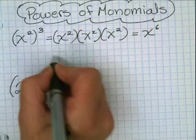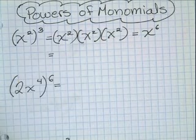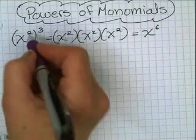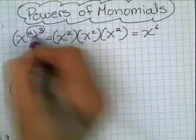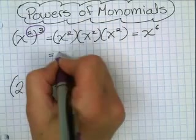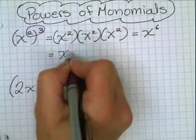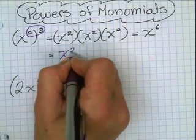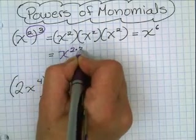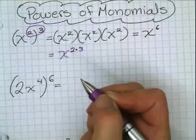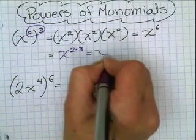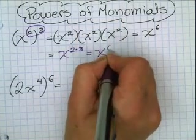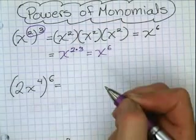The shortcut is to simply multiply the exponent with the raised power. So in this example, we would say x to the second power times the third power. 2 times 3 is 6, therefore we get x to the sixth power.